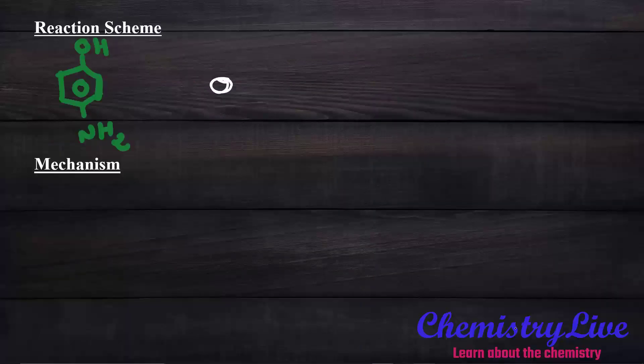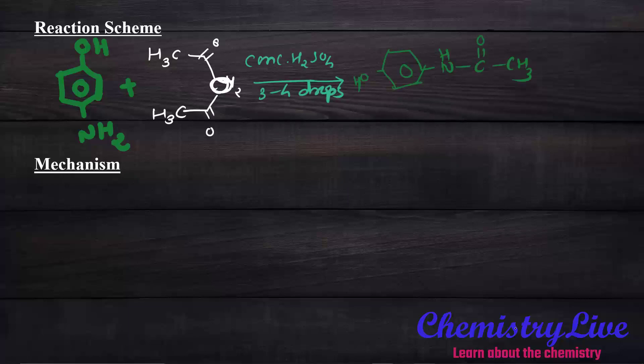Now we switch to the reaction. Para-aminophenol reacts with acetic anhydride in the presence of concentrated sulfuric acid, 3 to 4 drops as catalyst, and we will get paracetamol and acetic acid as a byproduct.